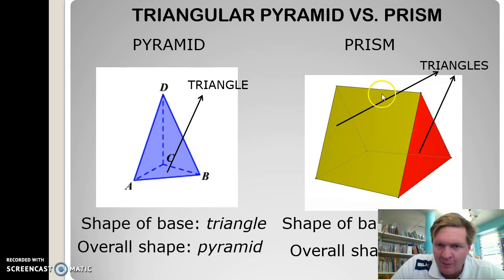The base, however, you'll notice looks like a square, and the ends of this particular shape are triangles, so therefore we have a triangular prism.